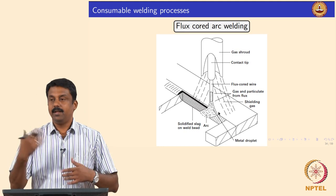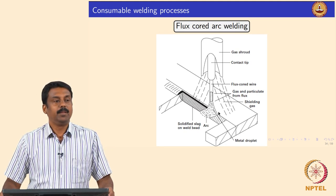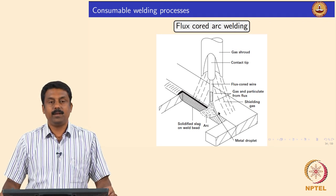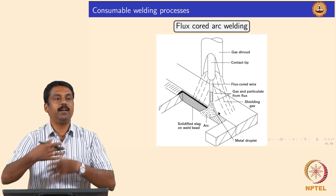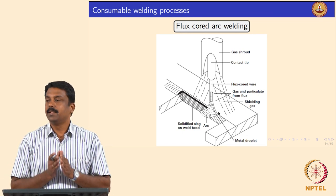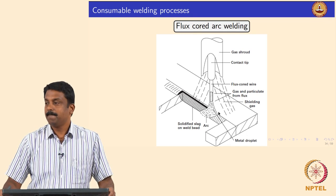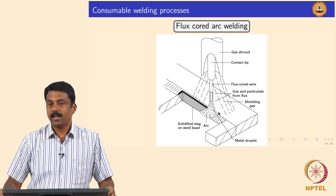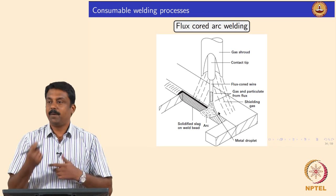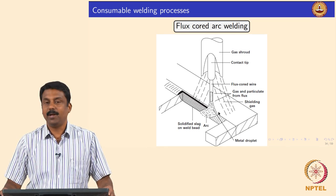I will just give an introduction and then we will see in the next class. The main disadvantage of using a stick electrode, MMAW electrode, is continuous feeding of the electrode. You have to use a stick, and once the stick is consumed you need to replace it. By replacing the stick with another form of electrode, we can make it a continuous process that can be automated.